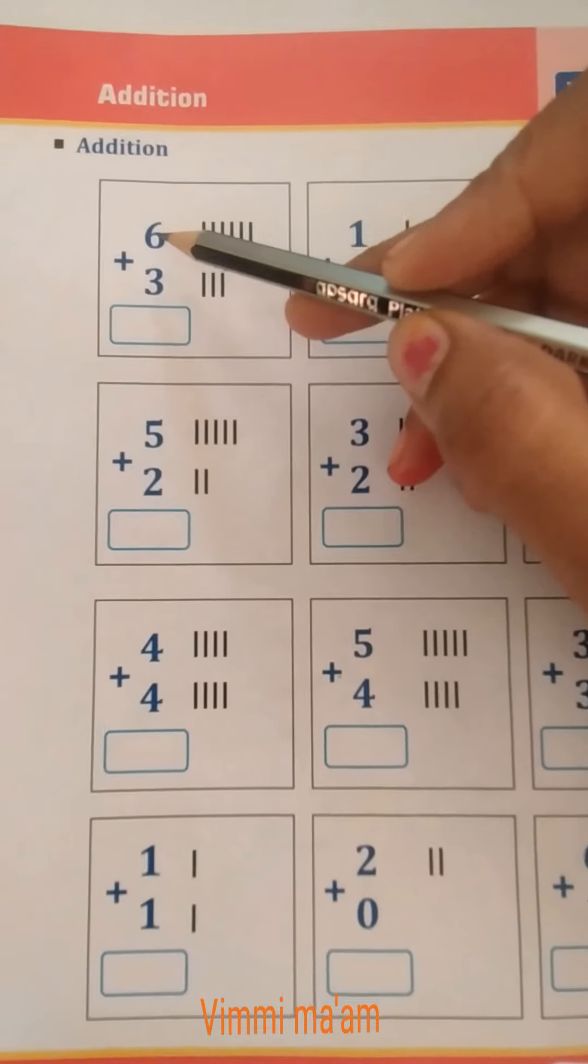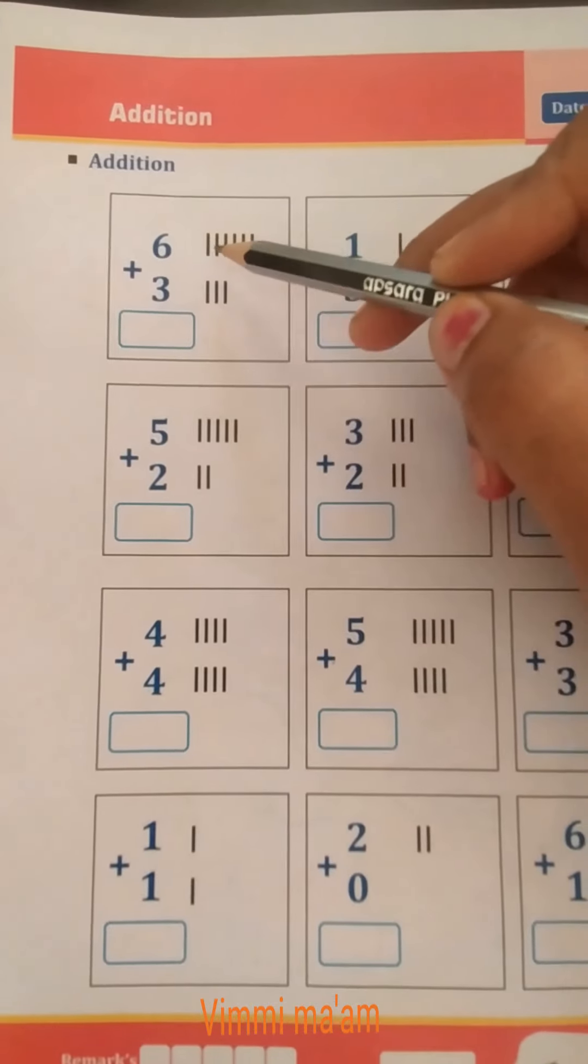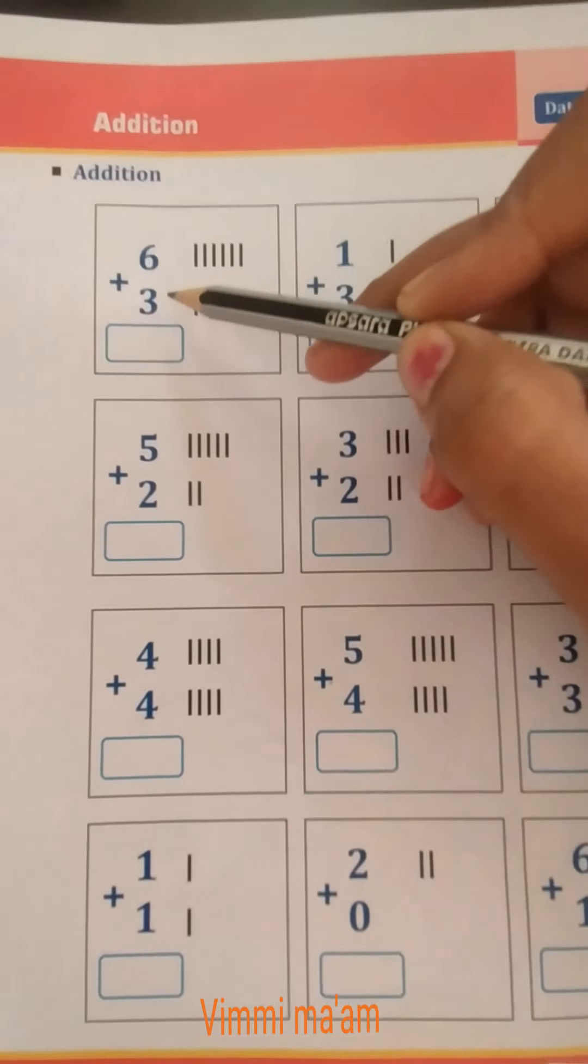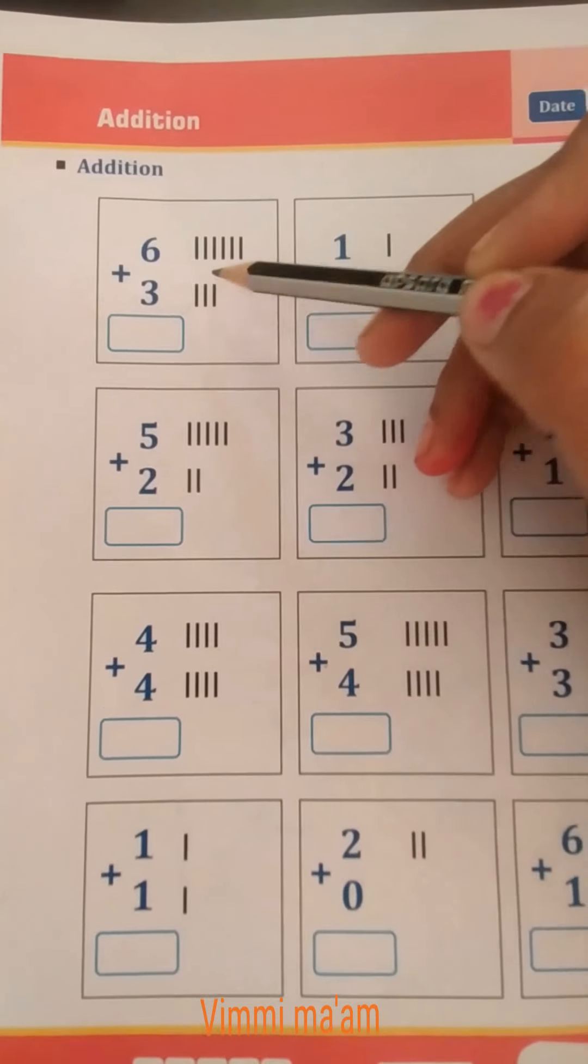Here given is number 6 plus 3. For number 6, we draw 6 lines: 1, 2, 3, 4, 5, 6. For number 3, we draw 3 lines: 1, 2, 3.